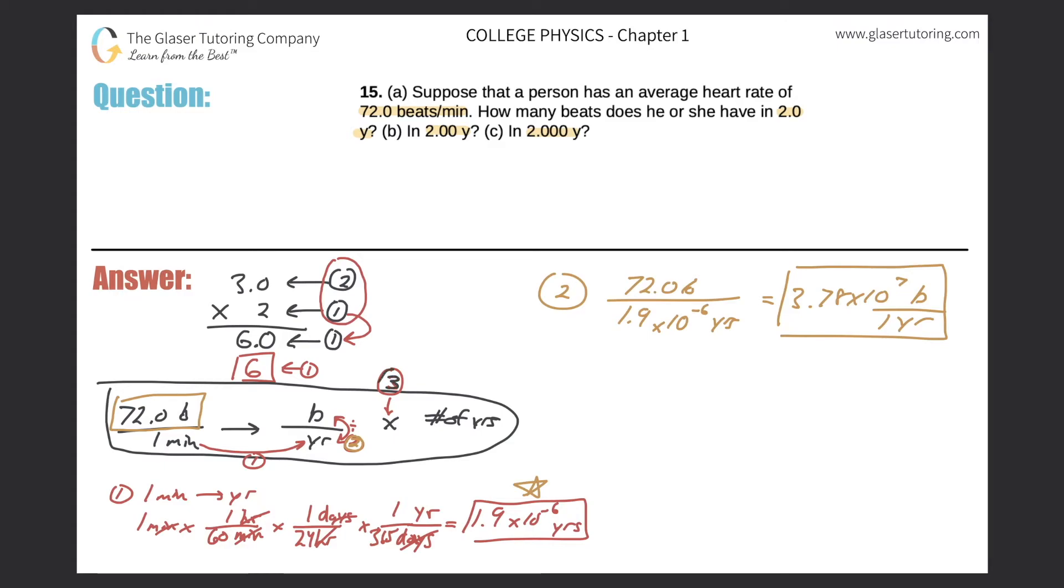Last but not least, we have now our third step. Our third step, now we have to then take the beats per year and multiply them by the number of years. So here's where we have to be considering significant figures. By the way, if you look back to here, I went down to two significant figures.